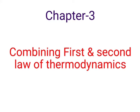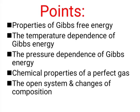In order to decide about the feasibility of a process, we must know the entropy changes of a system as well as that of the surroundings. After that we have learnt the Gibbs function and the Helmholtz function. In today's lecture we will start with the points included in chapter 3: properties of Gibbs free energy, temperature dependence of Gibbs energy, pressure dependence of Gibbs free energy, chemical properties of a perfect gas, and open system and changes of composition.